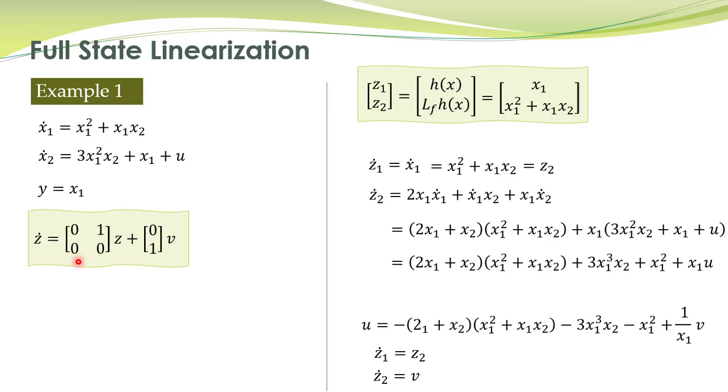Once you have a linearized system, you can easily design this new control input v by using the state feedback, which is minus k1 z1 minus k2 z2. You already know the procedure. For example, the command 'place' in MATLAB.